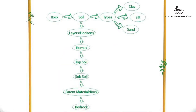Here's a mind map for you. Soil is made from rock and is of three types: clay, silt, and sand. Soil is made up of several layers also called horizons: humus, topsoil, subsoil, parent material or rock, and bedrock.